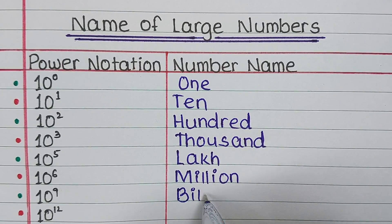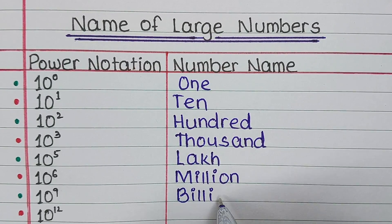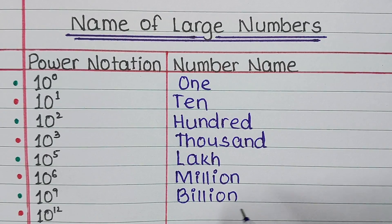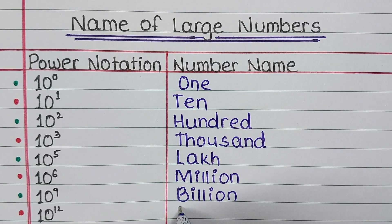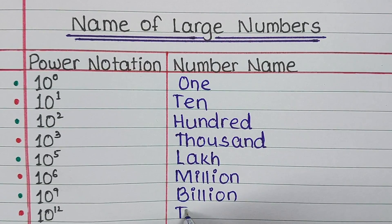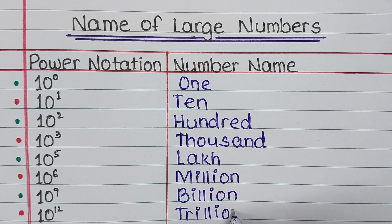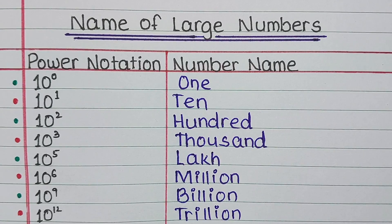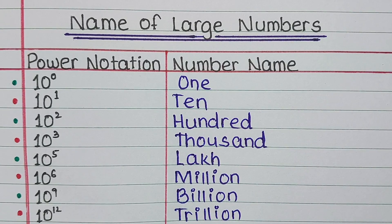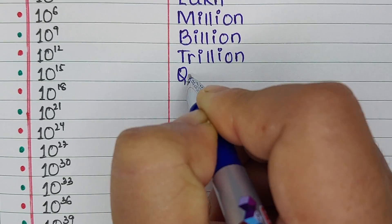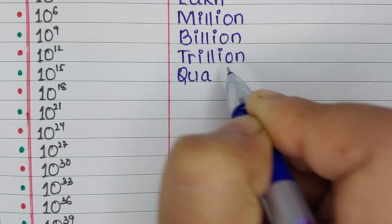Next is 10 to the power 9. It is named as Billion. Next is 10 to the power 12. It is Trillion.